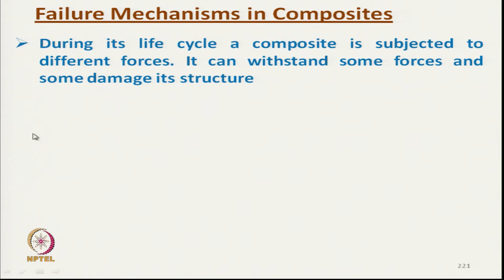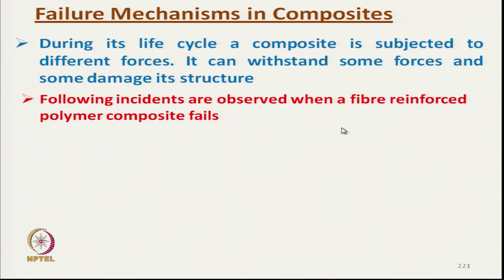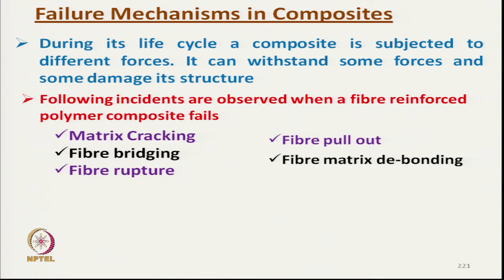During its life cycle, a composite is subjected to different forces — it can withstand some forces while others damage its structure. The following incidents are observed when a fiber reinforced polymer composite fails: matrix cracking, fiber pullout, fiber bridging, fiber-matrix debonding, and fiber rupture. These are the different mechanisms by which a composite can fail.